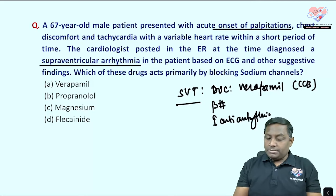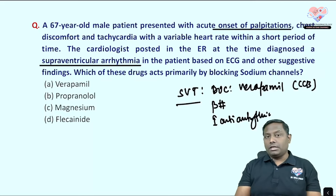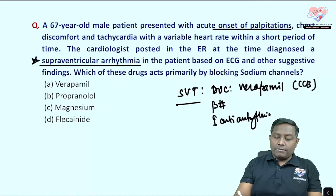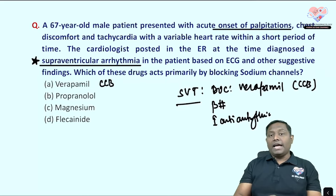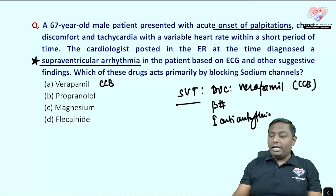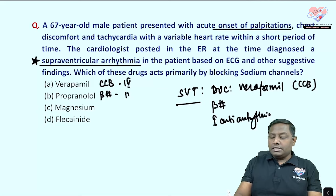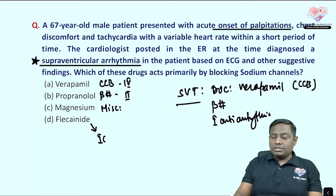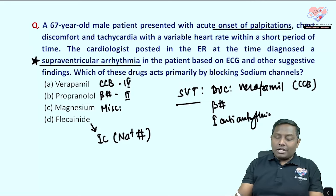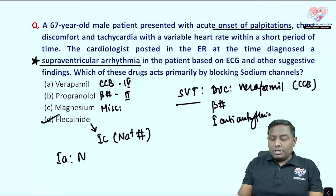The examiner asks which drug acts primarily by blocking the sodium channel. Option A, verapamil, is a calcium channel blocker (class 4). Propranolol is a beta blocker (class 2). Magnesium is a miscellaneous antiarrhythmic. Flecainide is a class 1C antiarrhythmic drug, which is a pure sodium channel blocker.